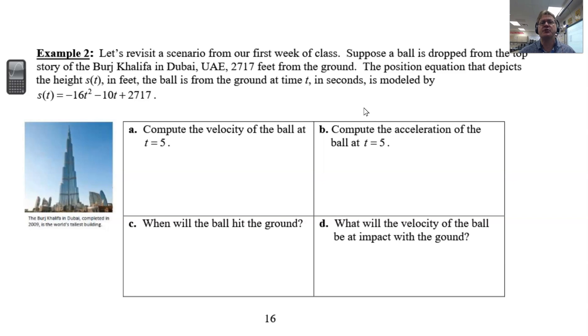We're going to look into this problem now just a little bit more thoroughly because there are so many calculus tools that we know now. The position equation that depicts the height, s(t) in feet, that the ball is from the ground is modeled by s(t) = -16t² - 10t + 2717.